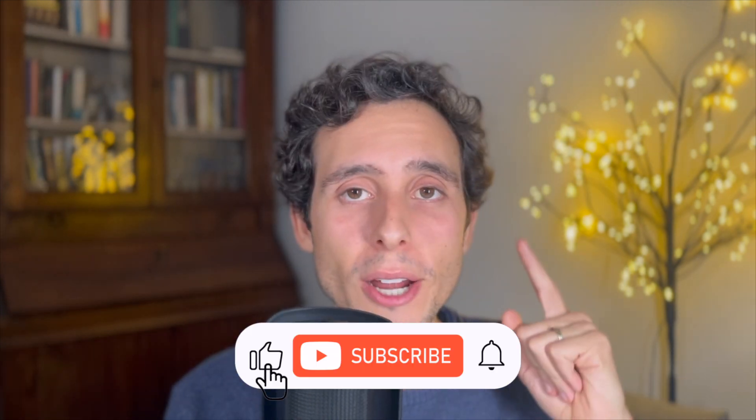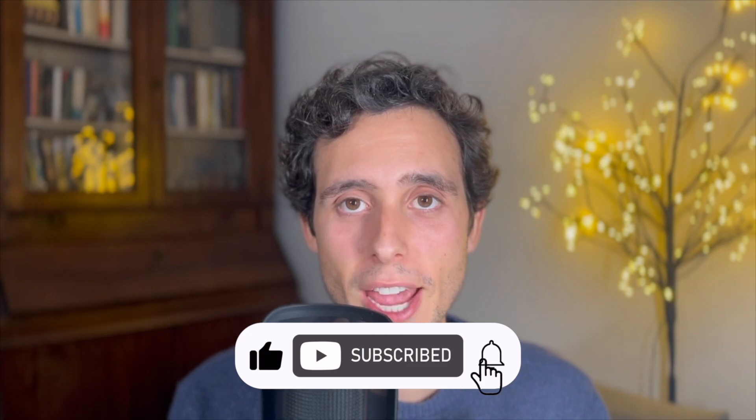These forms arise when the limits of functions lead to expressions that do not immediately suggest a clear or obvious result. There are seven standard indeterminate forms. If you're enjoying this video so far, please do not forget to like it and to subscribe to the channel. We've already discussed one of them: zero over zero. That's an indeterminate form.